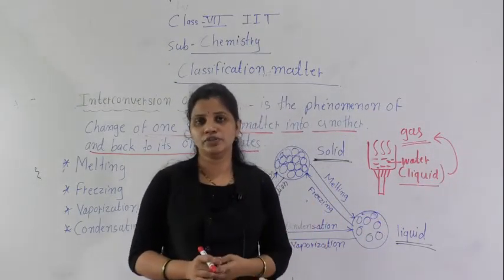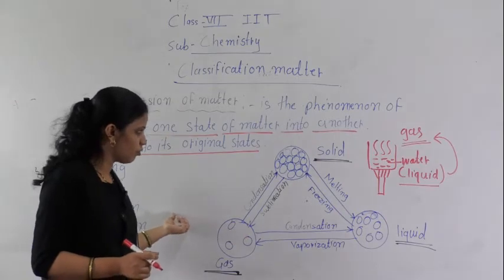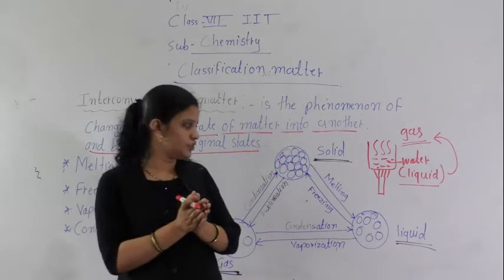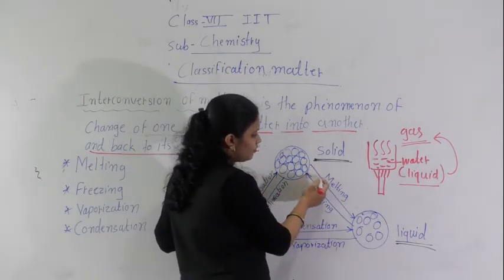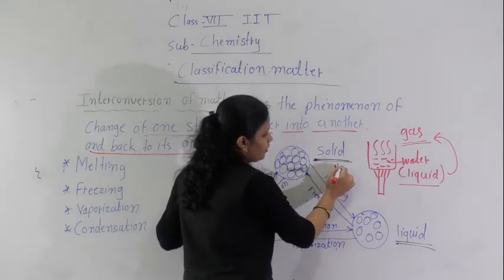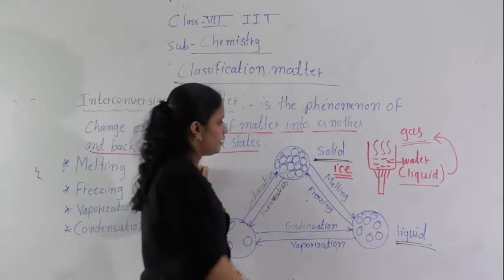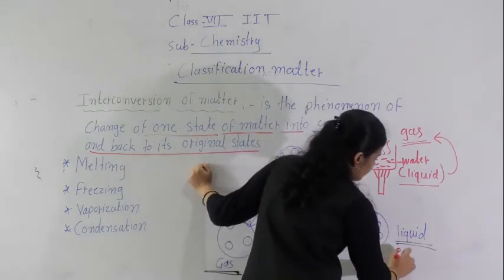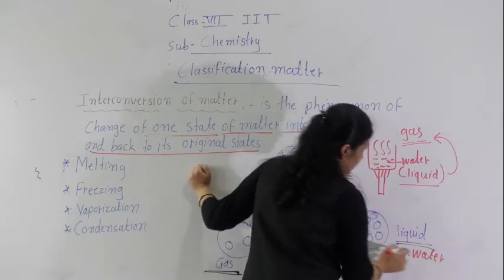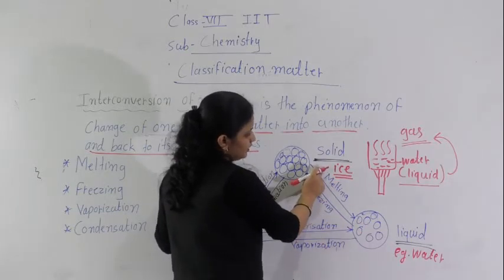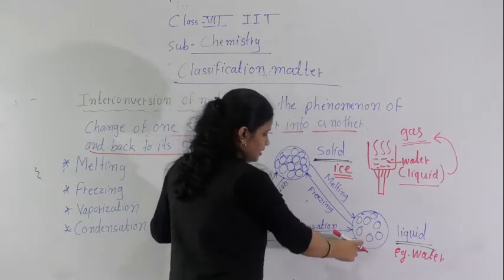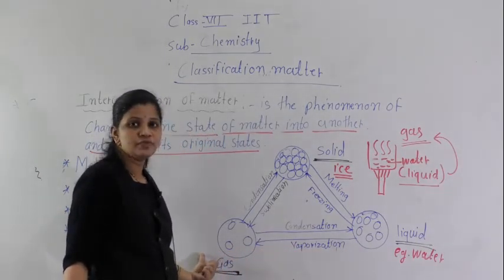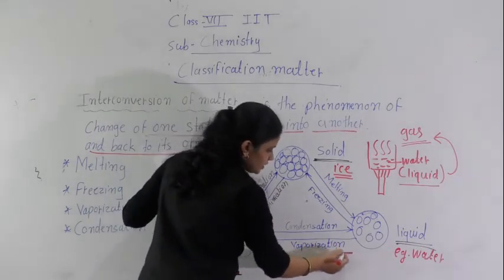These are the interconversion of states of matter, shown in the diagram. This is the solid, and see the molecular arrangement — they are closely packed. During the melting process, for example ice, when heat is provided, this ice is converted into water. In the liquid state, the molecules are loosely packed. Then when you give more heat to this water, it becomes gaseous — water vapors. That process is vaporization.